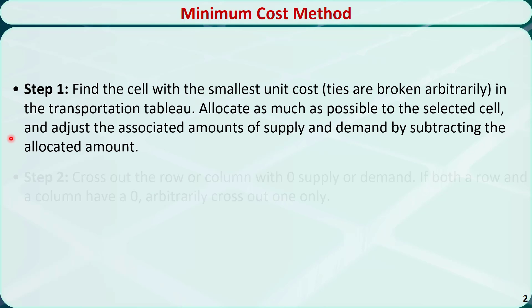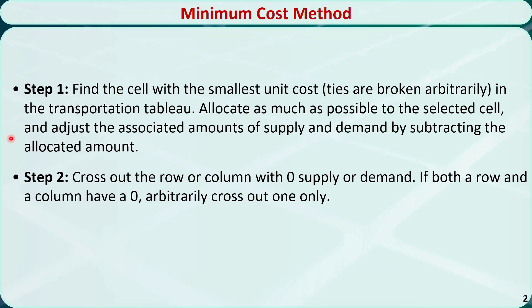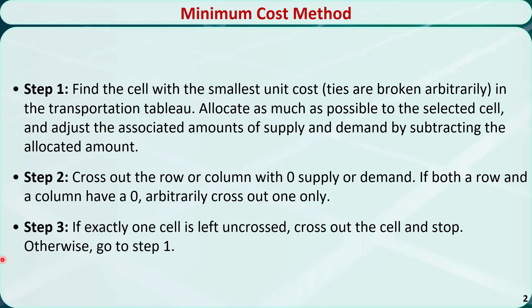In step 2, we cross out the row or column with zero supply or demand. If both a row and a column have a zero, randomly cross out one only. In step 3, if exactly one cell is left uncrossed, cross out the cell and stop. Otherwise, go back to step 1 and repeat the process.